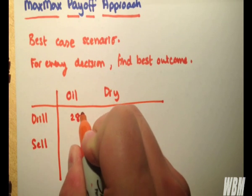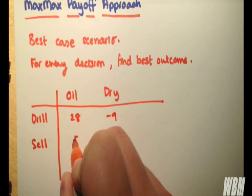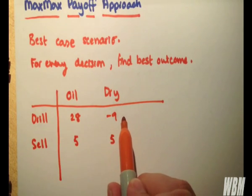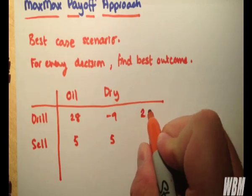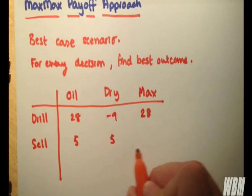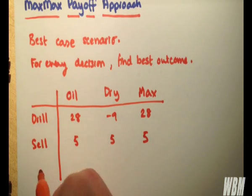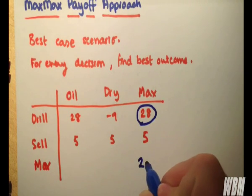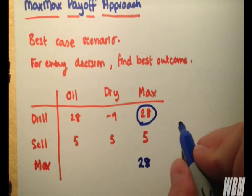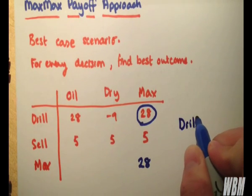So we have 28, minus 9, 5, and 5. So looking across, if we drill, what's the max? The max is 28. Looking across, if we make the decision to sell, obviously the max is 5. So the max decision overall is 28. So the max-max payoff approach would be drill.